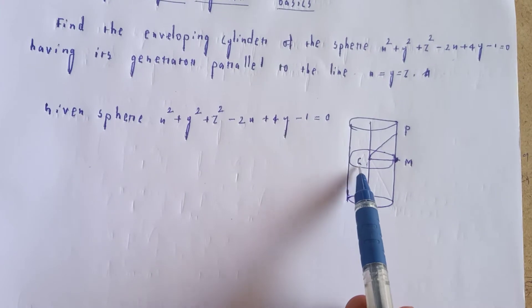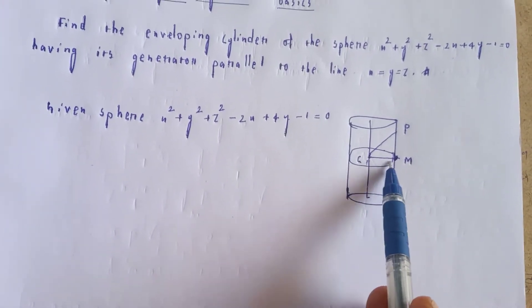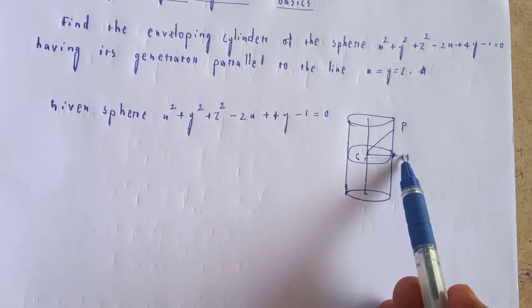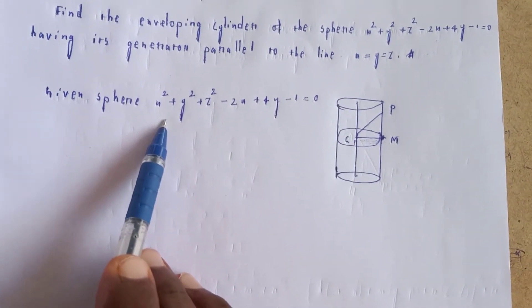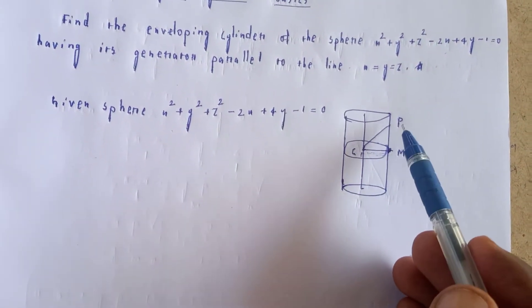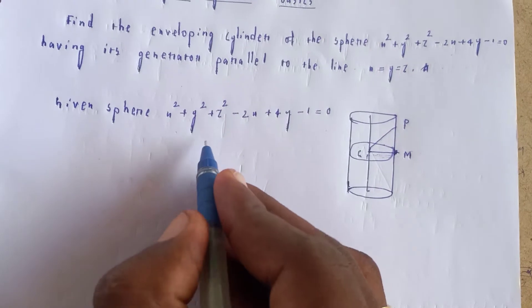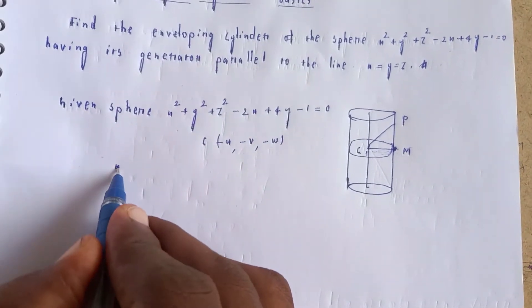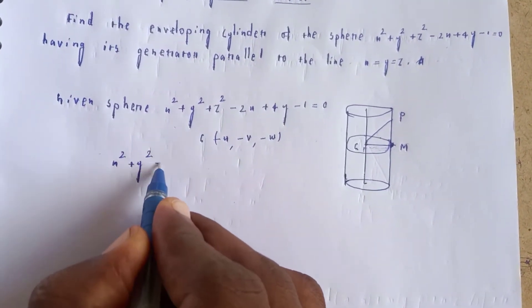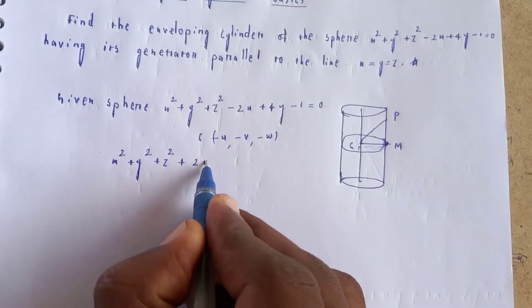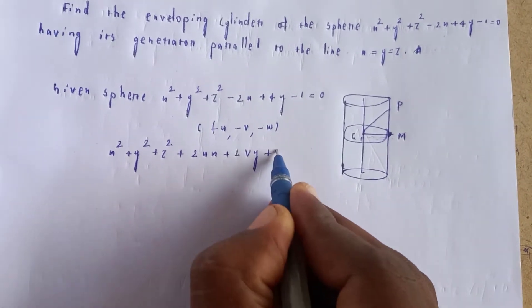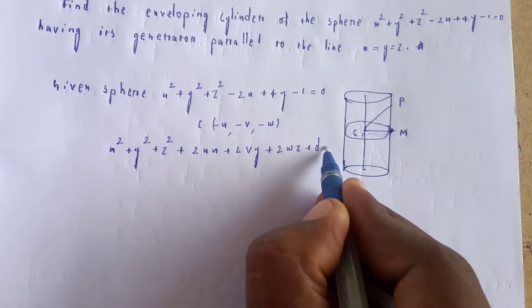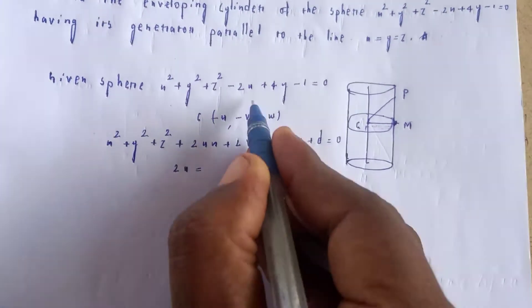The sphere equation will be compared to the standard form. The standard sphere equation is x squared plus y squared plus z squared plus 2ux plus 2vy plus 2wz plus d is equal to 0. Comparing: 2u equals minus 2.